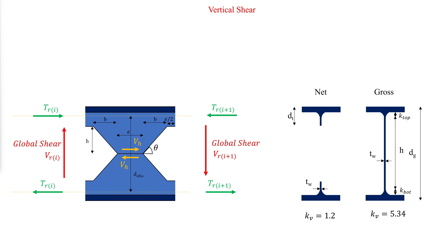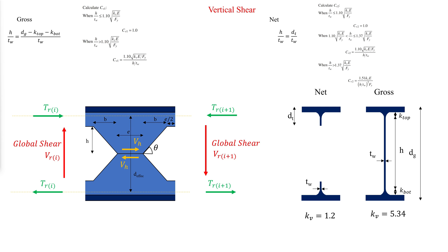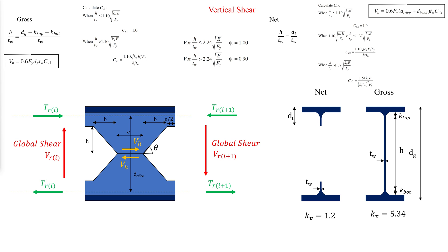At the gross section, H over tw is calculated accordingly, then CV1 is calculated as such. At the net section, H over tw is calculated accordingly, then CV2 is calculated as such. For both the net and gross sections, the strength reduction factor and nominal shear strengths are then determined as shown.